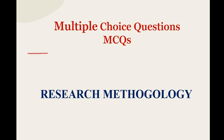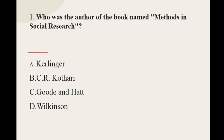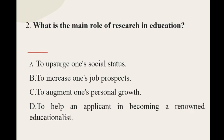Question number one: Who was the author of the book named 'Method in Social Research'? The options are Kerlinger, C.R. Kothari, Goode and Hatt, and Wilkinson. The correct option for question number one is Goode and Hatt.